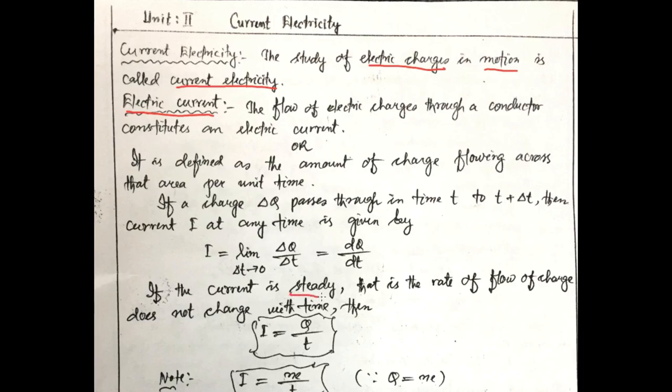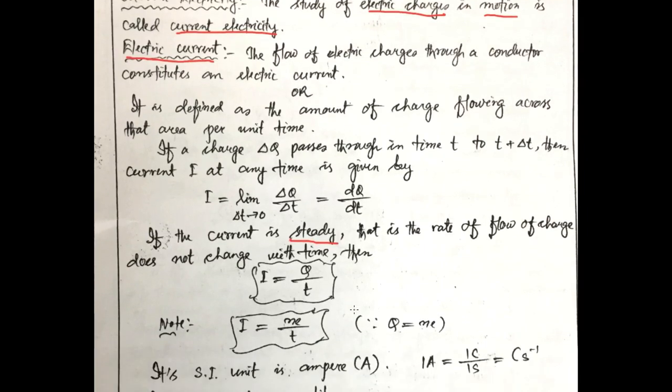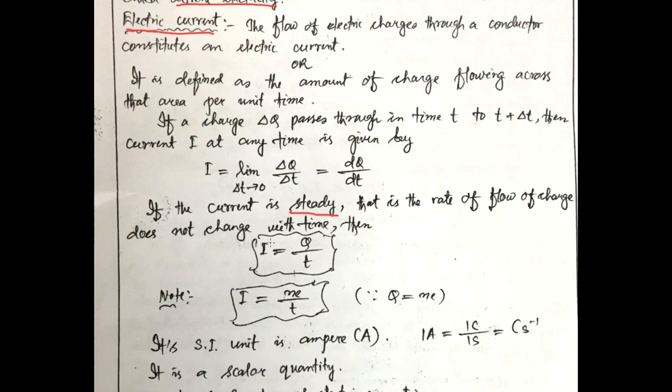If the current is steady, let me repeat again. If the current is steady, that is if the charges are moving with constant velocity, that is if the rate of flow of charge does not change with time, then we can define I equal to Q upon T, where I stands for electric current, Q stands for electric charge, and T is the time taken.